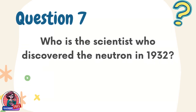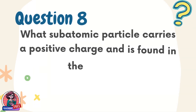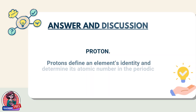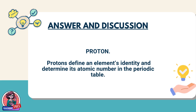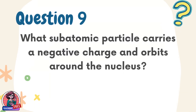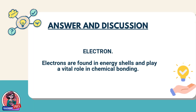Question 7. Who is the scientist who discovered the neutron in 1932? Answer: James Chadwick. He confirmed the existence of a neutral particle in the nucleus that adds mass without affecting charge. Question 8. What subatomic particle carries a positive charge and is found in the nucleus? Answer: Proton. Protons define an element's identity and determine its atomic number in the periodic table. Question 9. What subatomic particle carries a negative charge and orbits around the nucleus? Answer: Electron. Electrons are found in energy shells and play a vital role in chemical bonding.